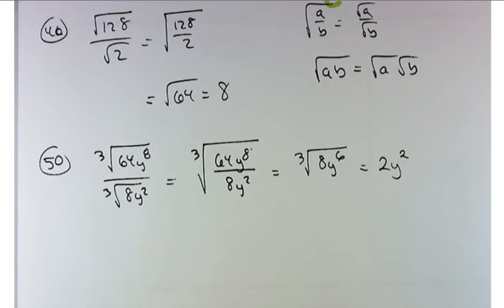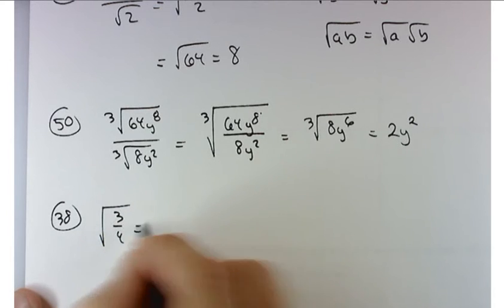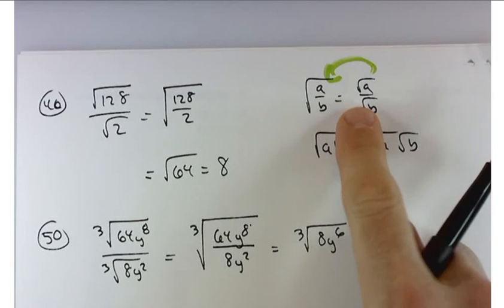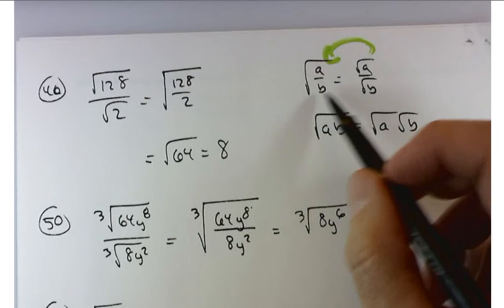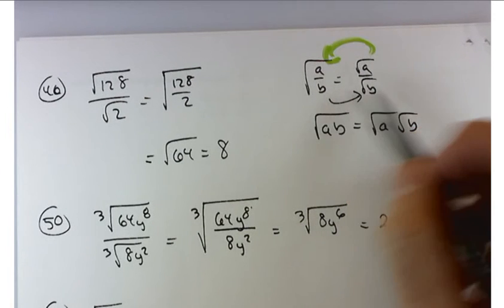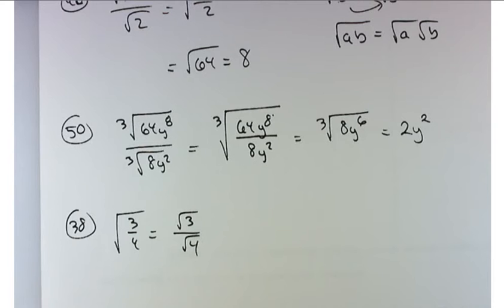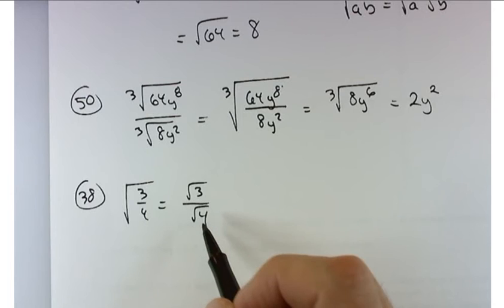So to finish up, let's take a look at problem 38: square root of 3 fourths. Now again, I'm going to go back and use this idea here - that the square root of a fraction is the fraction of the square roots. I can break it up. So this time I'm going to move from here to here. I think the reason should be clear once you put that denominator together. Square root of 4 simplifies pretty nicely, right? In fact, that's going to be our goal in the next section when we rationalize denominators, is to get a perfect square here in the denominator. So I end up with square root of 3 over 2.